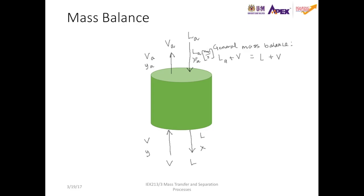The unit of La is mole per second, while the unit of XA is dimensionless because it's a fraction. The unit of L is mole per second as well, same goes for V — mole per second — and for Va, mole per second.